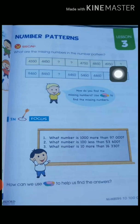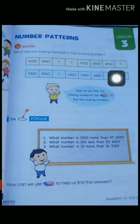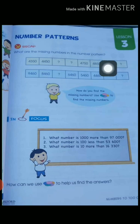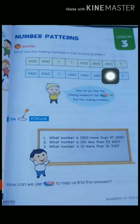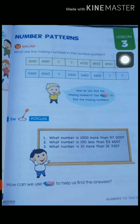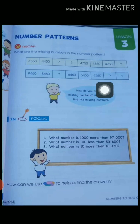Similarly, we have to find the last number. For this, we add 100 to the second-last number, which is 4,950. When we add 100 to it we get 5,050, which is the last number. Similarly, we have to find the missing numbers in the second number pattern as well.